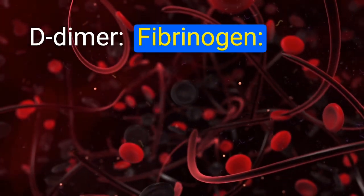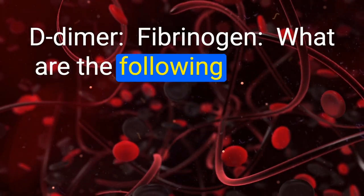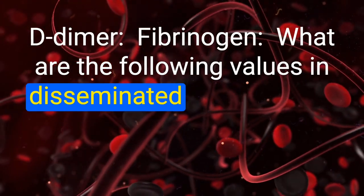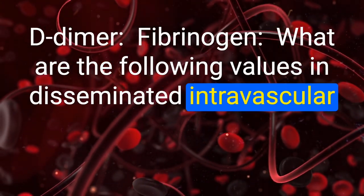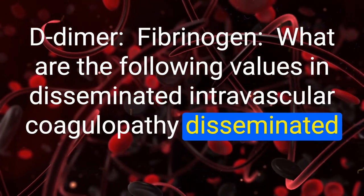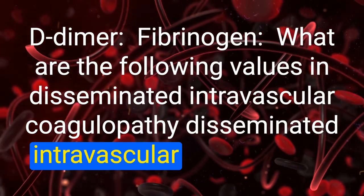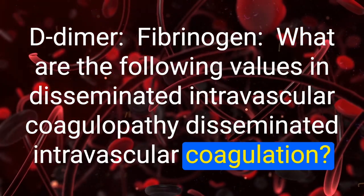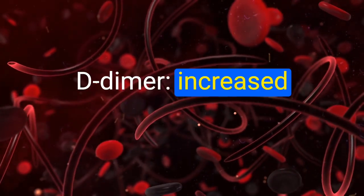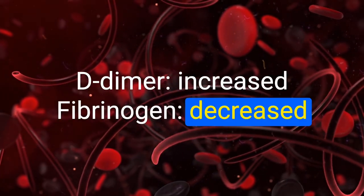What are the D-dimer and fibrinogen values in disseminated intravascular coagulation? D-dimer: increased. Fibrinogen: decreased.